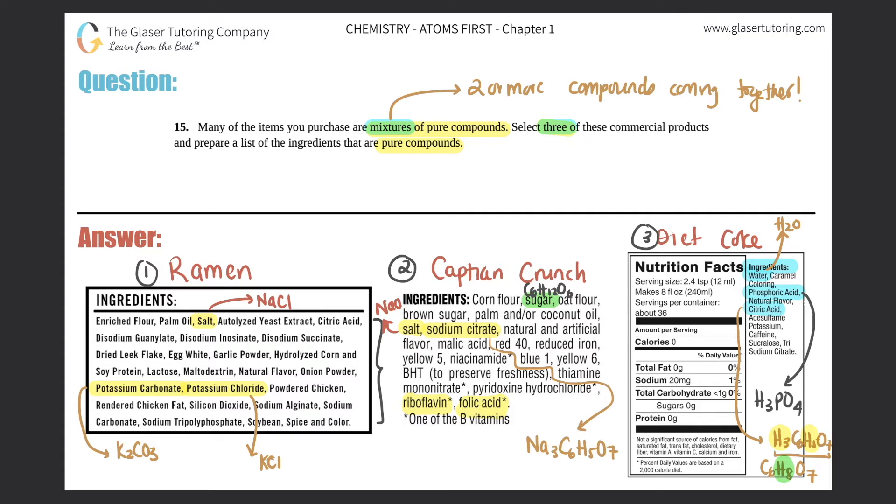All right guys, that's how you identify your pure compounds in a complete mixture. So just going over it, remember: ramen, Captain Crunch, Diet Coke—any of the commercial products that you have at home that has an ingredients list is going to be a mixture. You just had to find three compounds. Basically, all of these are going to be compounds, and I just went a little bit further to give you the chemical composition.